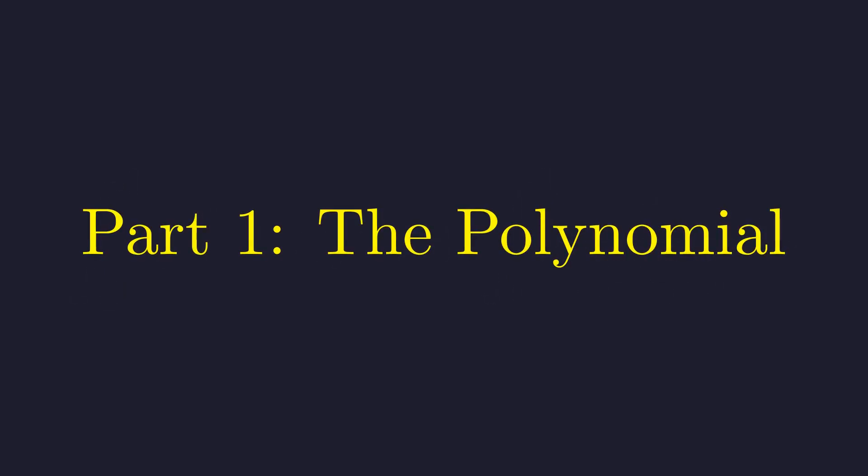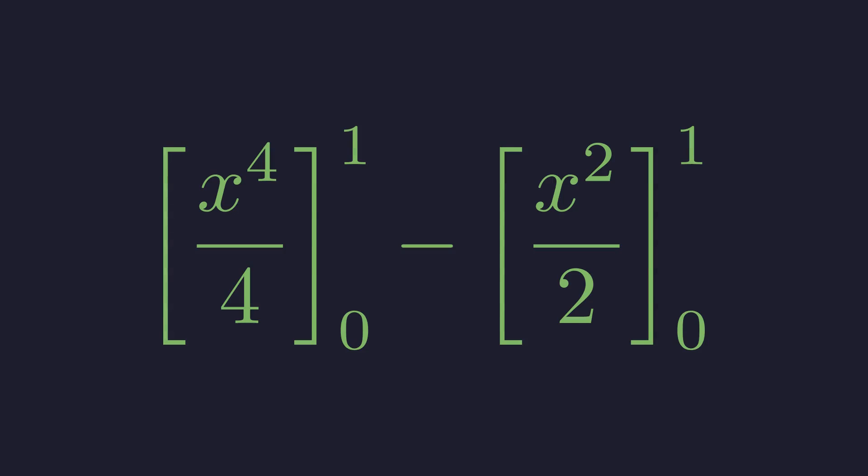Let's tackle the polynomial part first. We can split this into the integral of x cubed and the integral of x. Both fall to the power rule immediately. The integral of x cubed is x to the fourth over 4. The integral of x is x squared over 2.